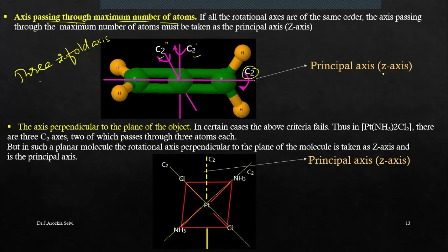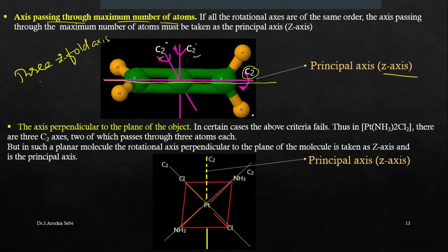Generally, we say the principal axis is the Z axis. Whichever axis passes through more atoms is the principal axis — but that is not true for a planar molecule. For a planar molecule, for example platinum dichlorodiamine, even though an axis passes through platinum and two chlorine atoms, that is not the principal axis. For a planar molecule, the axis perpendicular to the molecular plane is the principal axis.